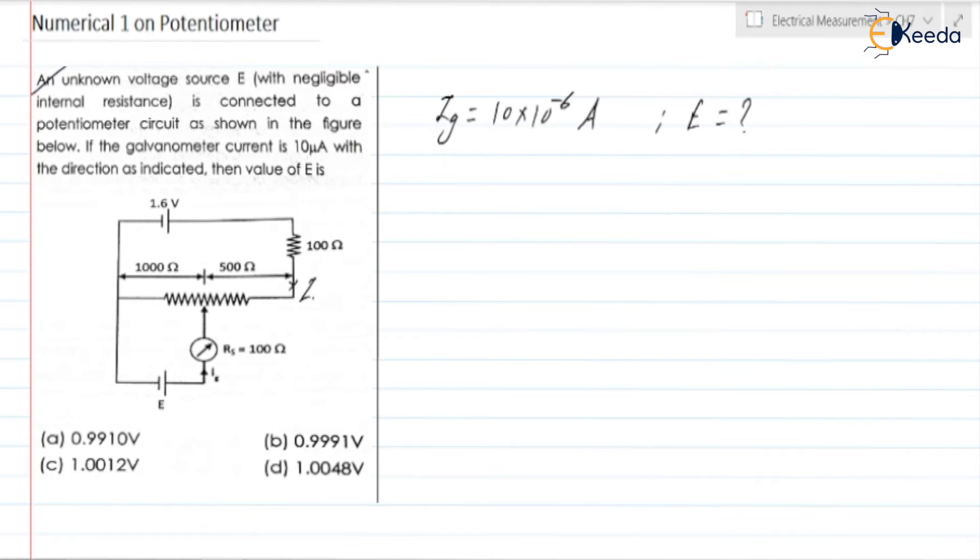What about the current here? Current here is Iw. So if current here is Iw, what about the current here? Current here is Iw plus Ig. So this current is Iw plus Ig.